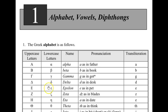Gamma — a G as in got. Delta — a D as in desk. Epsilon — E as in pet.